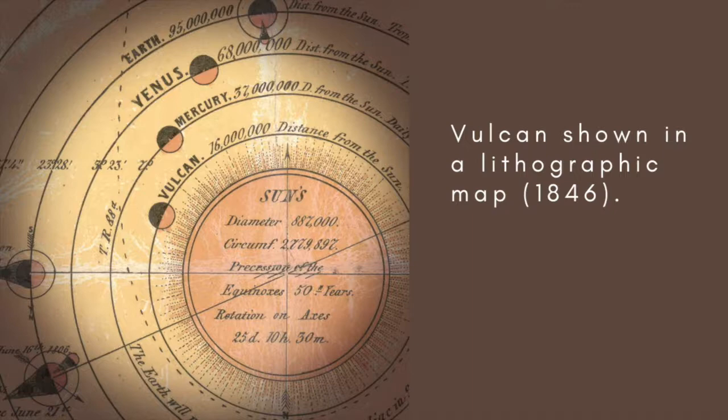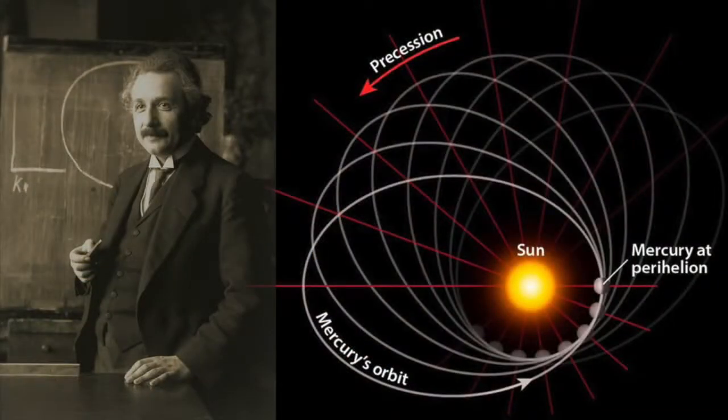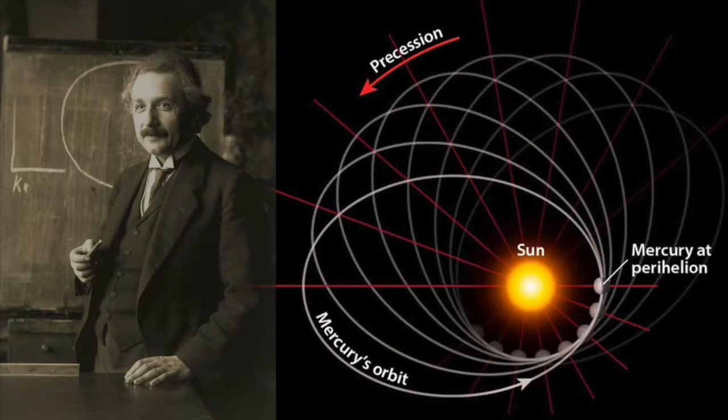But gradually it became clear that Vulcan didn't really exist. And in 1915, with the publication of Einstein's General Theory of Relativity, the anomaly in Mercury's orbit was completely explained without any need for an extra-gravitating object.